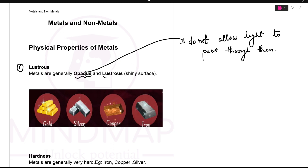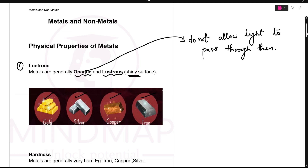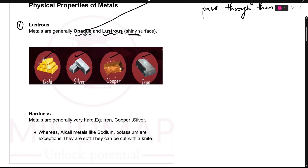Second is they are lustrous, that means they have a shiny surface. The metals shine. For example, look here — gold, silver, copper, iron. Iron means loha. Copper is what electrical wires are made of. So these all are opaque and lustrous.